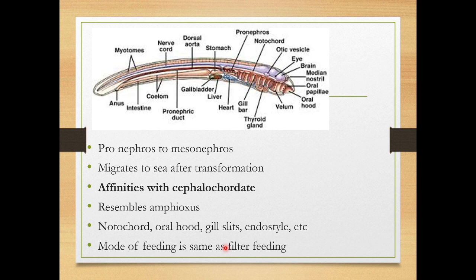However, Cyclostomata shows remarkable advancement over Cephalochordata with a distinct head, brain, and cartilaginous cranium, which is absent in Amphioxus. There is presence of rudimentary vertebrae, multi-layered epidermis, definite liver, true kidneys, eyes, internal ears, and sympathetic nervous system — all characters not seen in Amphioxus or Cephalochordata.